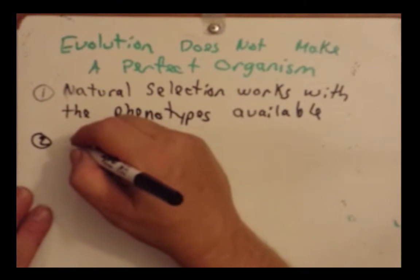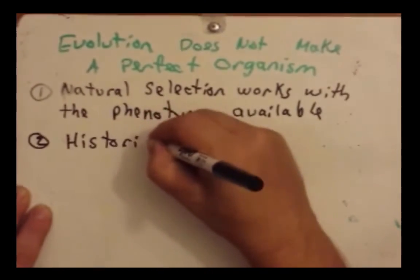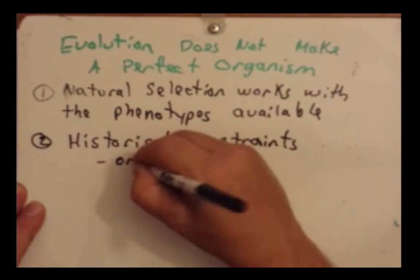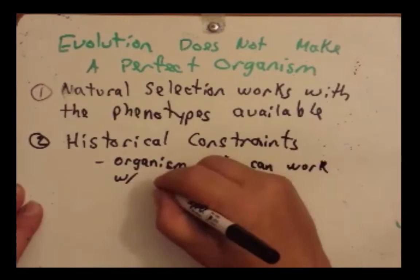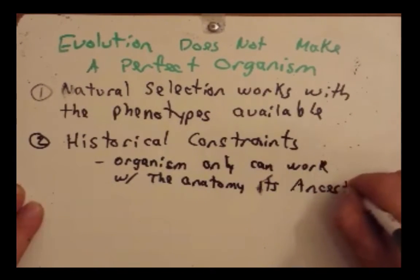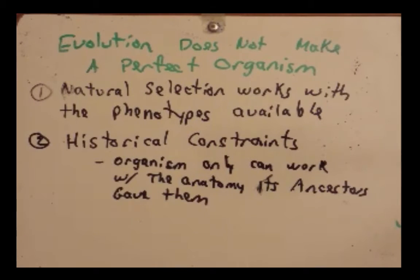Evolution is limited by its historical constraints. This means that an organism can only work with the anatomy its ancestors gave them. For instance, when birds evolved, they didn't go back and erase the anatomy of the flightless animals before them — they had to work with the anatomy that was already there.